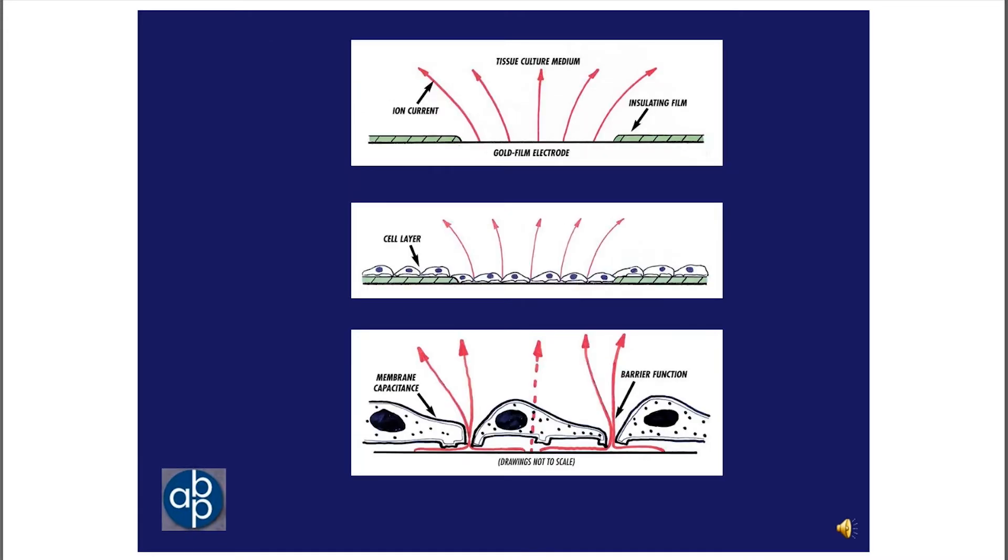The next slide shows the reason we see these changes in impedance. In the upper panel, we see the gold film electrode carrying current. Of course, this is actually carried by ions in solution. The green area is the insulating film that defines the small electrode. The electronics assures that this current is constant at all times. So even when the cell layer grows over the insulating film and the electrode, as shown in the middle panel, the current flows through the cell layer. And if we look more closely at the bottom of this slide, we see that with the cells in place, the current must flow out from beneath the cell around the adhesion plaques and go through this narrow space between the electrode and the basal membrane. Then the current passes through the cell-cell junctions into the bulk to find the counter electrode or another small electrode.